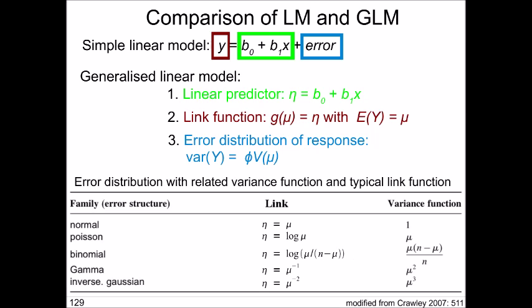For the binomial case, the link function is the log of the odds: log(mu / (n - mu)). In our presence-absence example we used probability p, but more generally mu is the number of successes and n is the total. The variance function gives a variance that is highest in the middle and lower at the extremes — consistent with what we discussed for binary data.